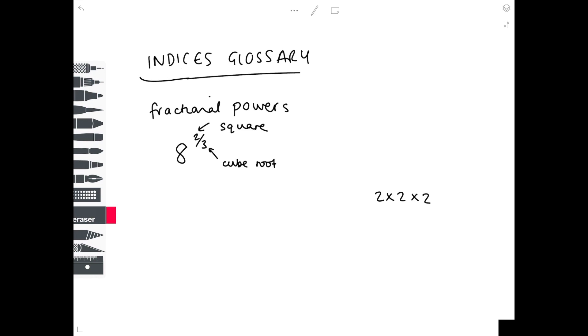Just to show you that we could have done it the other way around. It doesn't actually matter what order we do it in. Let's do the squaring first and then the cube rooting. What's 8 squared? It's 8 times 8, which is 64. Now we need to cube root 64. What number needs multiplying by itself 3 times to get to 64? If we do 4 times 4, we get 16, times 4 gives us 64. So the answer is again 4. It doesn't matter which way around you do it.